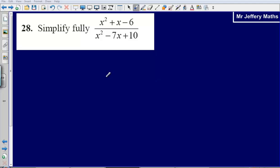This is question 28 from the 2008 non-calculated paper. Here I'm asked to simplify fully x squared plus x minus 6 over x squared minus 7x plus 10.